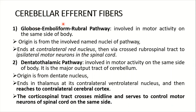The first cerebellar efferent pathway is the globose-emboliform-rubral pathway, involved in motor activity on the same side of the body. Its origin is from the globose, emboliform, and fastigial nuclei, and it ends at the contralateral red nucleus, then via the crossed rubrospinal tract to ipsilateral motor neurons in the spinal cord. All efferent fibers from the cerebellum ultimately end at the ipsilateral side, as the cerebellum controls the ipsilateral side of the body.